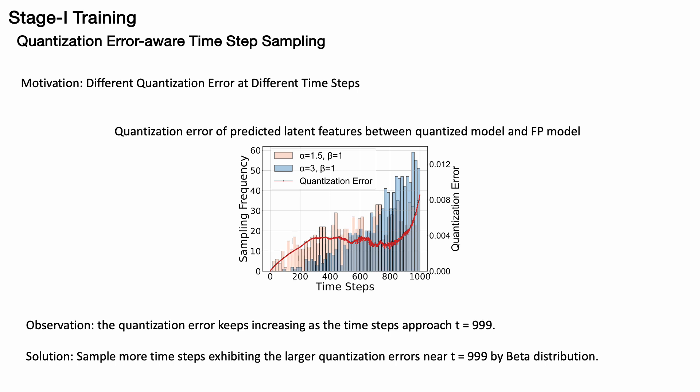Our goal is to sample more time steps where larger quantization errors occur near T equals 999. We utilize a beta distribution with alpha set to 3 and beta set to 1. This strategy allows the model to reduce quantization error in later time steps, thereby enhancing overall performance.